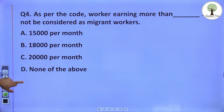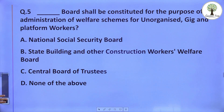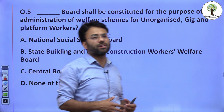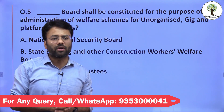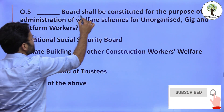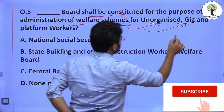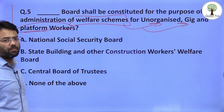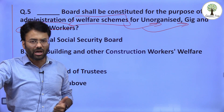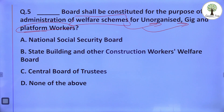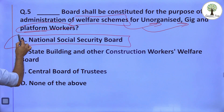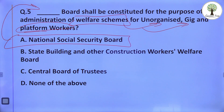Question number five relates to a board proposed by the Code on Social Security. The code requires constituting a board for the administration of welfare schemes for unorganized workers, gig workers, and platform workers. If you are not clear on what unorganized, gig, or platform workers are, you can refer to the concept series on the same channel. The correct answer here is the National Social Security Board, which will both idealize and suggest to the central government formulations of schemes for the welfare of these types of workers.